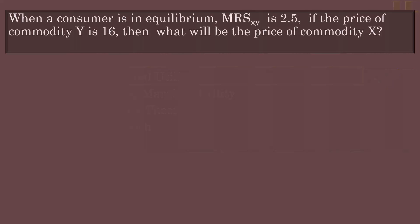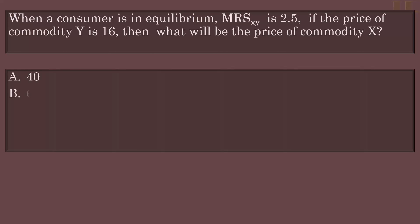When a consumer is in equilibrium, the Marginal Rate of Substitution of X for Y is 2.5. If the price of commodity Y is 16, then what will be the price of commodity X? Options: 40, 6.4, 23.2, 24.